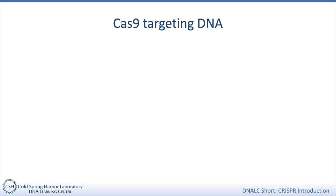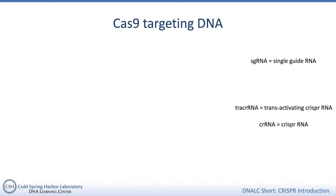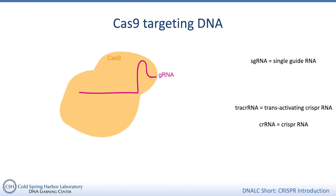This RNA is referred to as a guide RNA, usually written gRNA, or sgRNA for single guide RNA. This single guide RNA is actually a combination of two RNA molecules: a transactivating CRISPR RNA, tracrRNA, and a CRISPR RNA, crRNA. In bacteria, these are transcribed as separate molecules, which then form a hybrid RNA that forms a complex with the Cas9 protein.